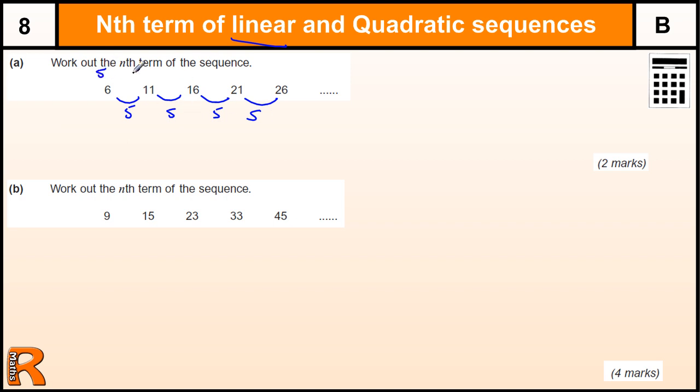So if we write the 5 times table above the numbers, hopefully you'll spot a really straightforward sequence there, where we've got to just add 1 to the 5 times table. So it's the 5 times table which is 5n, and then we've got to add 1 to get 5n plus 1 for two marks. There's one mark for the 5n, and there's one mark for the plus 1.